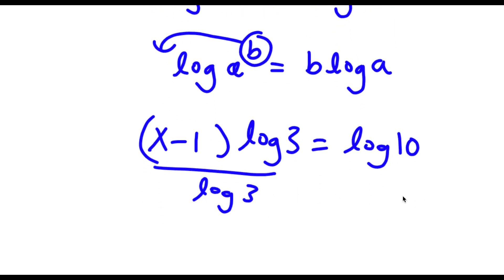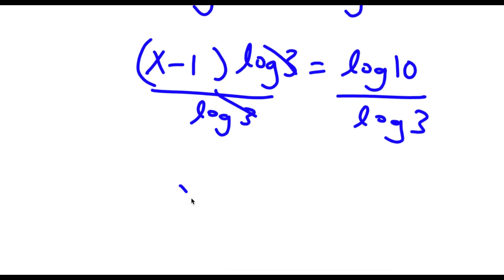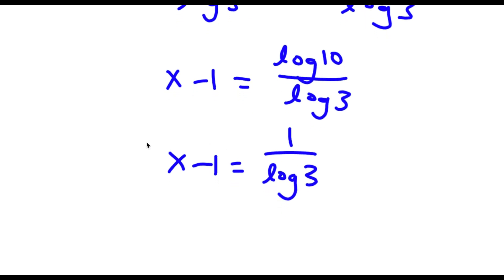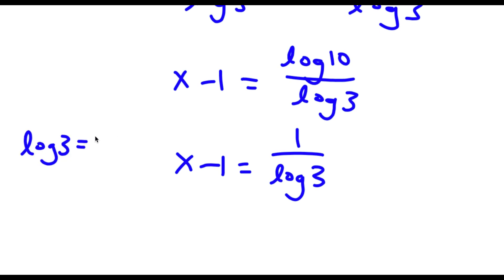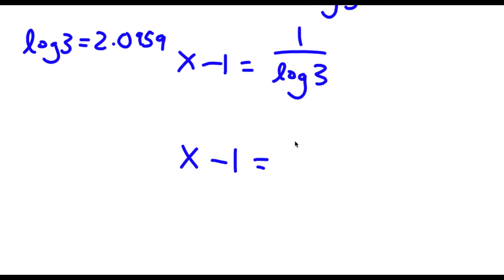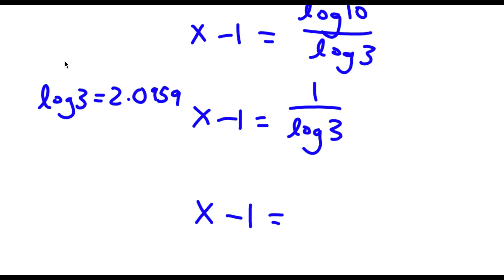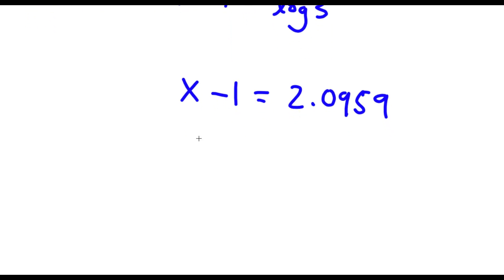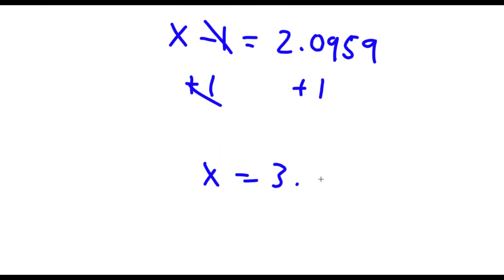Now if I divide both sides by log 3, these two cancel out and I'm left with x minus 1 is equal to log 10 over log 3. Now log 10 is actually equal to 1, so now I have x minus 1 is equal to 1 over log 3. And log 3 is equal to 0.4771, so x minus 1 is equal to 2.0959. Now if I add 1 on both sides, these two cancel out and I'm left with x is equal to 3.0959.